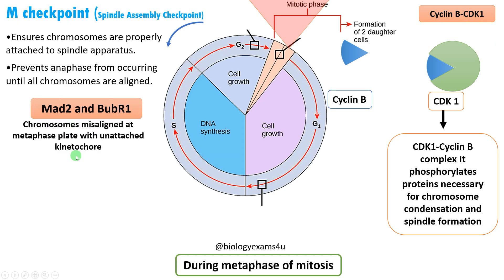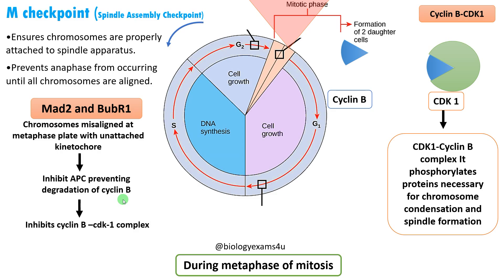The regulatory proteins are MAD2 and BubR1. These proteins monitor spindle attachment. If any chromosomes are not properly aligned on the metaphase plate, they inhibit the anaphase promoting complex, or APC, preventing the degradation of cyclin B. This inhibition keeps CDK1 active until chromosomes are correctly attached, ensuring proper segregation during anaphase. Thus MAD2 and BubR1 prevent the cell cycle from entering anaphase.